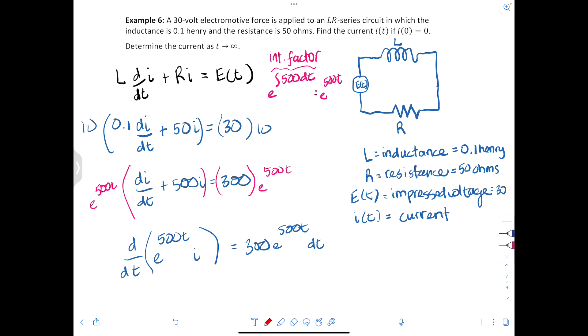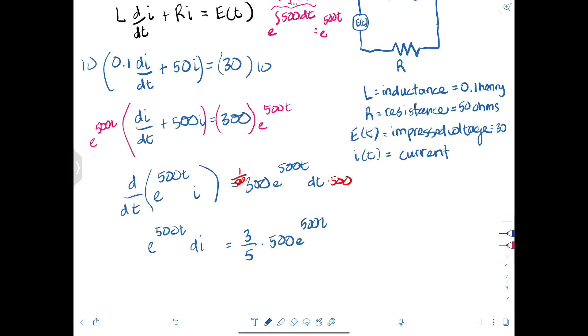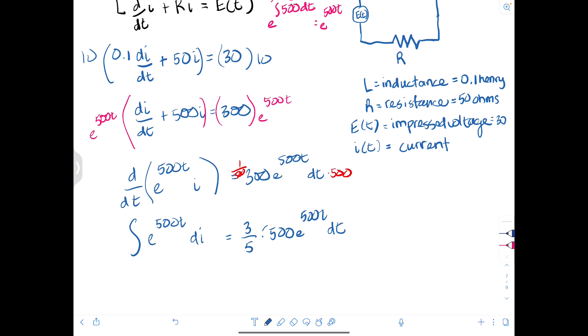And so du would equal to 500 dt. So I need to have a 500 here. And so I need to divide by 500. And now when I integrate both sides, so let me put it in that right format. We'll have e to the 500t I equals 3/5, because of the 300 over 500, 500 e to the 500t dt. And now I can integrate both sides.